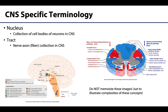Now let's talk about two terms specific to the CNS. A nucleus is a collection of cell bodies in the CNS. You will have a very similar description in the peripheral nervous system, but it has another name. These nuclei are often some of the deeper structures of the gray matter, and there are so many nuclei and they are quite complex — so please don't memorize this image. It's just here to give you an idea of these structures and where they are located. Just observe where nuclei can be located in the brain.